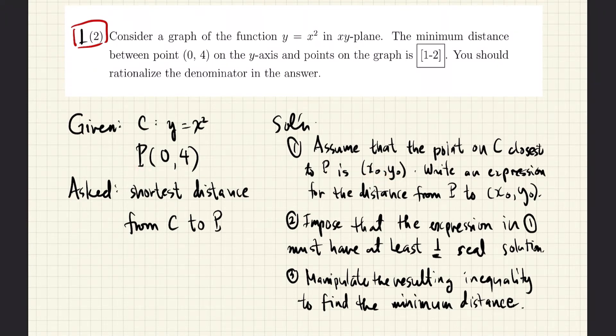We then impose that the equation we obtained must have at least one real solution. That is because if there are no solutions to the equation, that means that there is no point that is closest to P. If there is at least one solution, that means that there is at least one point that is closest to P.